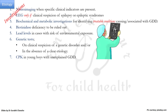Investigations for etiology require neuroimaging when specific clinical indicators are present; MRI brain is preferred over CT due to better soft tissue delineation. EEG should be done only if there is clinical suspicion of epilepsy or epileptic syndromes, for example West syndrome or Ohtahara syndrome.